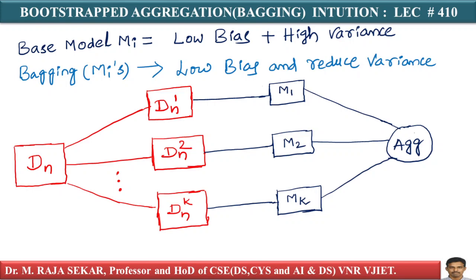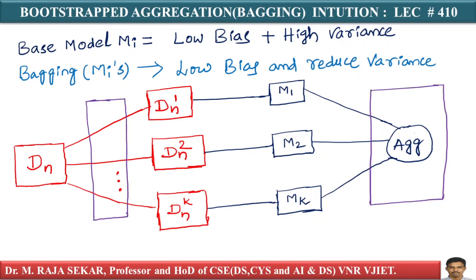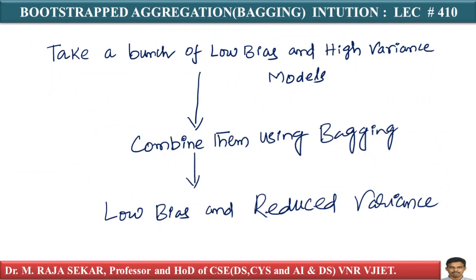This is the core fundamental idea. Bagging intuitively says: take a bunch of low-bias, high-variance models and combine them using bootstrapping and aggregation. What you get is a low-bias, reduced-variance model.